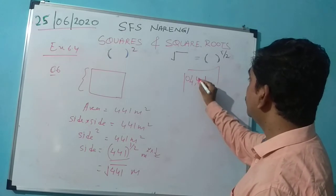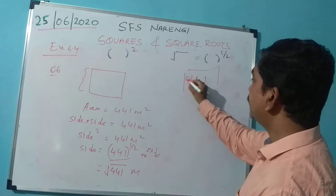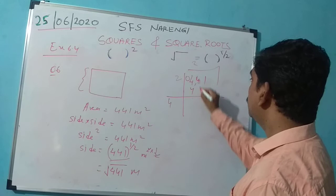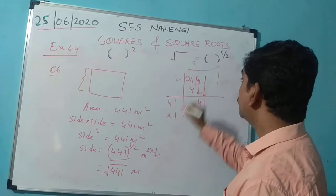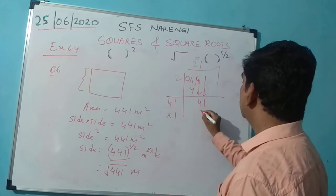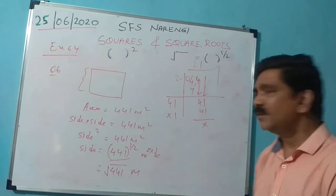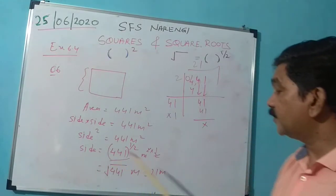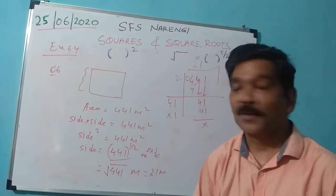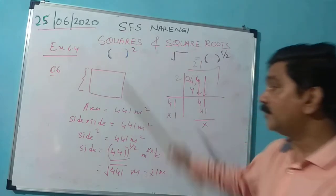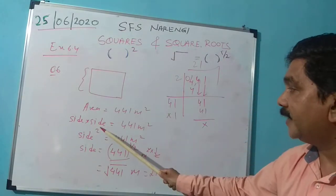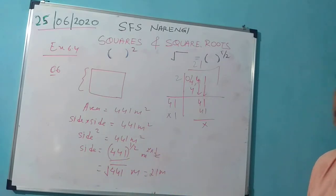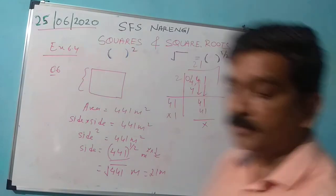To find the square root of 441, make pairs starting from the right: 41 is paired, 4 is not. So we get 2, double it to get 4; 4 minus 4 is 0, bring down 41; 41 into 1 is 41. Therefore the square root of 441 is 21 meters. So the side of the square is 21 meters.